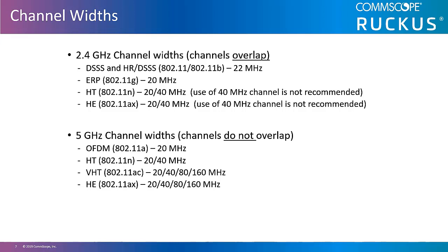802.11 prime, the original 802.11 standard from 1997, and 802.11b released in 1999, use 22 megahertz wide channels and provide data rates of 1, 2, 5.5, and 11 megabits per second, operating only in the 2.4 gigahertz band. Introduced along with 802.11b in 1999 was 802.11a, the first 802.11 technology to support the 5 gigahertz band. 802.11a and 802.11g, which only uses 2.4 gigahertz, use 20 megahertz wide channels because they both use OFDM.